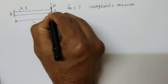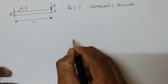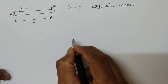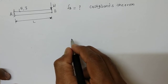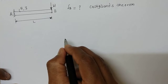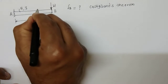Deflection at point B is to be found using Castigliano's theorem. In order to get the deflection at point B, I take a section XX at a distance X from end B.